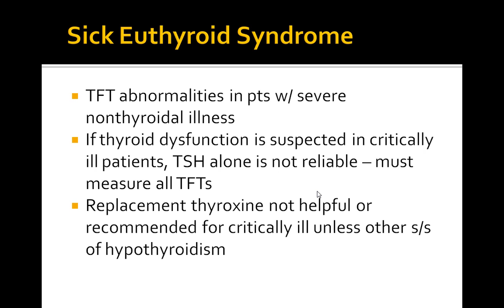In mild illnesses, there's a decrease in T4, which leads to a T3 conversion. There's increased reverse T3, which leads to a decrease in T3.